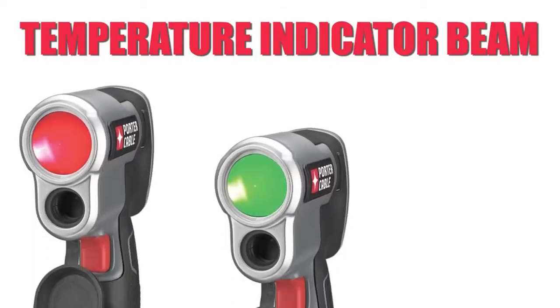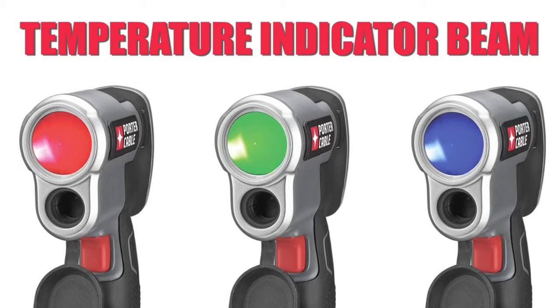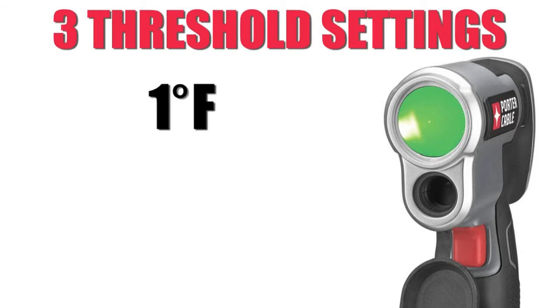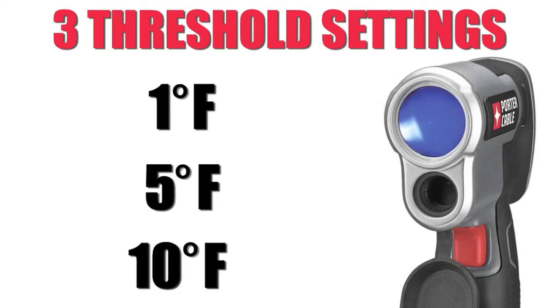The Porter Cable infrared thermometers have an innovative temperature indicator beam that changes color when a temperature difference is detected. The units have three threshold settings at which the indicator beam will change.